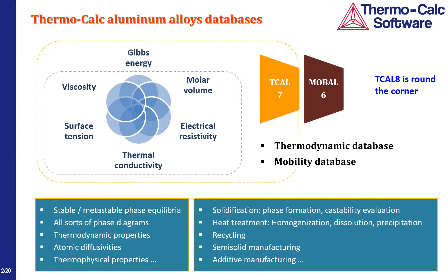Our aluminum alloy databases consist of a thermodynamic database TCL7 and an atomic mobility database MobileAL6. TCL7 is more than a conventional thermodynamic database. In addition to descriptions of Gibbs energy, it also contains viscosity and surface tension of liquid, molar volume, electrical resistivity, and thermal conductivity of liquid and all solid phases. One can directly use the databases to calculate various properties, stable and metastable phase equilibria, and different types of phase diagrams.